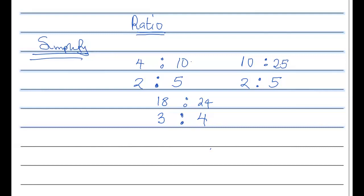So 18 ratio 24 simplifies to three ratio four. What about 10 ratio 14? Which number goes into both — is it five? No, because five can go into 10 but five cannot go into 14. So it's two.